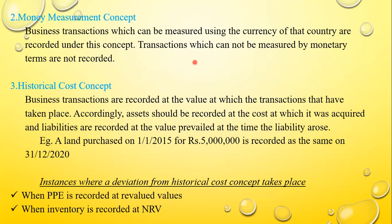Number three is the historical cost concept. Business transactions are recorded at the value at which the transactions took place. Accordingly, assets should be recorded at the cost at which they were acquired, and liabilities are recorded at the value prevailed at the time the liability arose. For example, a land purchased on 1-1-2015 for 5 million is recorded at the same value on 31-12-2020 as well.